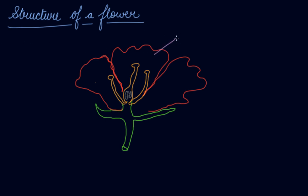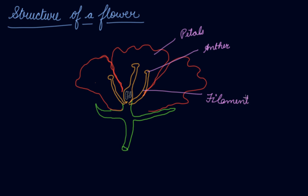These are the petals — we all know the petals of the flower. This top part is known as the anther. This long tube is known as the filament. This middle part is known as the style.